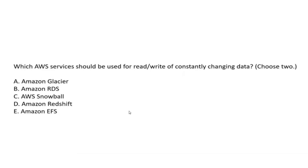Let's start with the first question: which AWS service should we use to read or write for constantly changing data? Choose two. When you get a 'choose two' option, you have to choose two options from the given options. In your exam you may also encounter 'choose three.' The options are: Amazon Glacier, Amazon RDS, AWS Snowball, Amazon Redshift, and Amazon EFS.